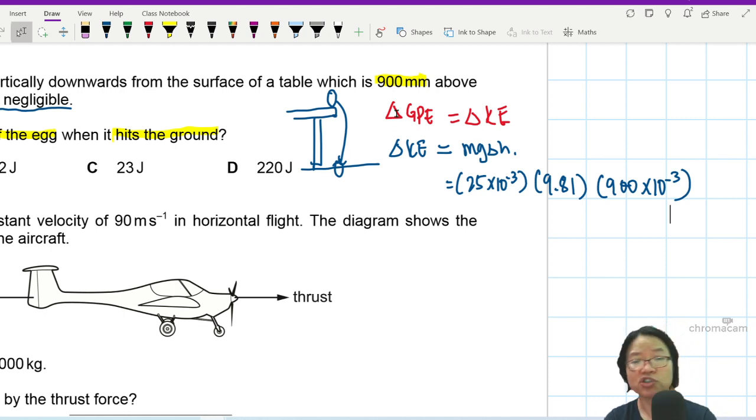So change in KE is change in GPE. Because as the egg falls, it will lose its potential energy and it will speed up. So for this Terlo question, I will get 0.22 joule.